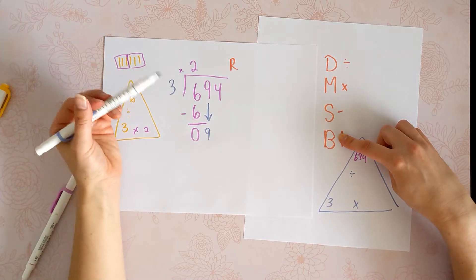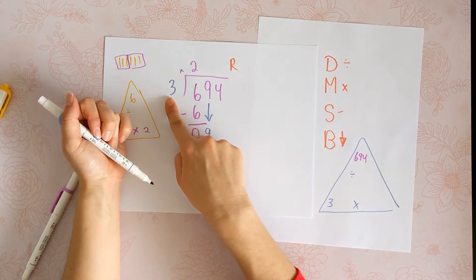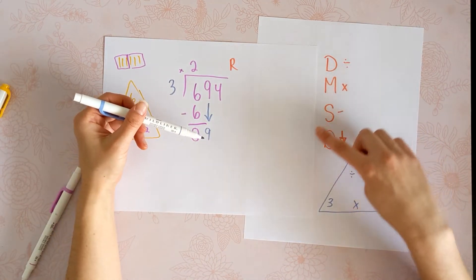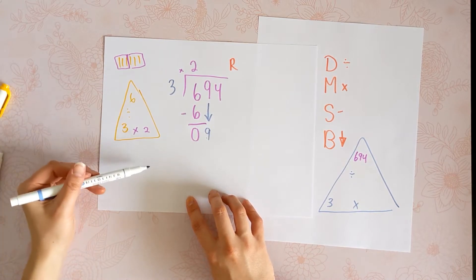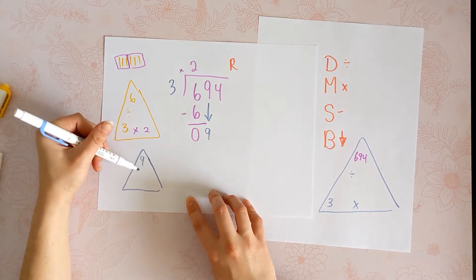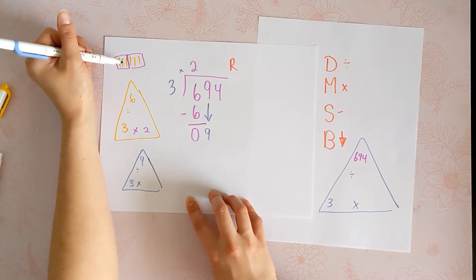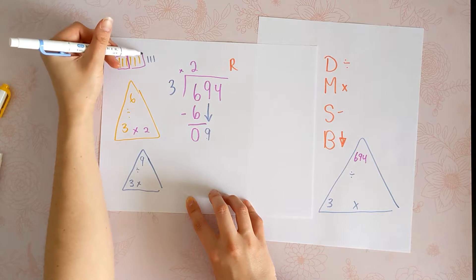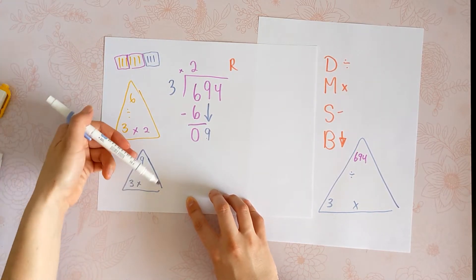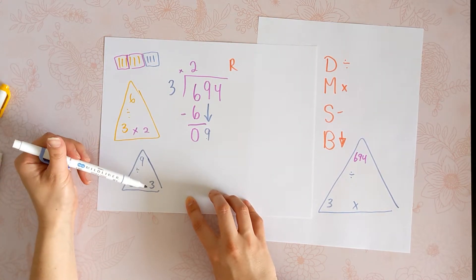Now we're going to divide. What are we dividing by? Always use that same 3. So now we're going to do 9 divided by 3. If we draw another triangle, we are saying how many 3s fit into 9, or 3 times 3 is 9. We had 2 before, and now we have 3.